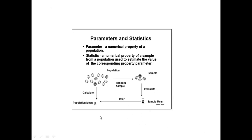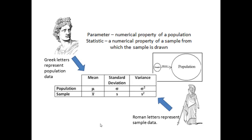For the sample, we use x-bar for the mean, and mu represents the larger unknown population. The same is true for standard deviation and variance — Roman letters represent the sample data and Greek letters represent the population data.